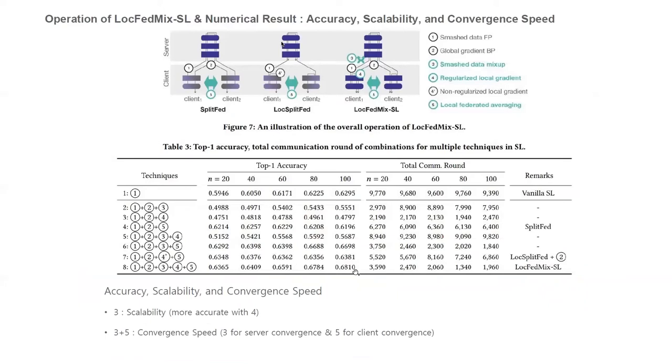By integrating the above three techniques carefully, we designed our novel parallel SL framework coined LocFedMixSL. Briefly, our proposed LocFedMixSL can be simplified in the following three steps: forward propagation with SMASH data mix-up, backpropagation with local and global gradients, and periodic local model aggregation. First, all clients propagate input data through each lower model segment and produce SMASH data. Then the client passes the SMASH data through each auxiliary network to generate L_hat_i, while sending it to the server at the same time.